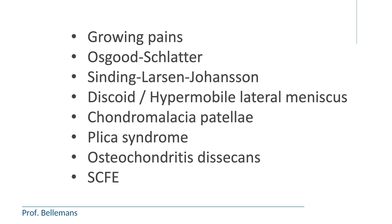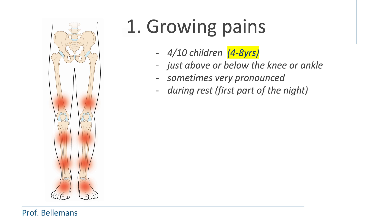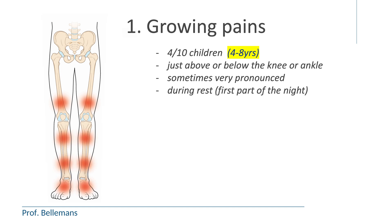The first condition is growing pains. Growing pains occur in 4 out of 10 children, usually between the ages of 4 to 8 years. Usually the pain is located just above or below the knee, or just above or below the ankle, on one side only, or both sides at the same time, or a mixed appearance on any of the locations shown in the drawing. Usually the pain starts during periods of rest, for example in the evening or during the first part of the night, when the child wakes up in pain and starts crying.